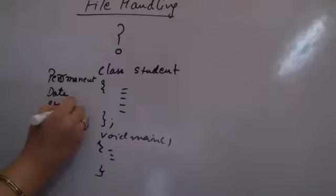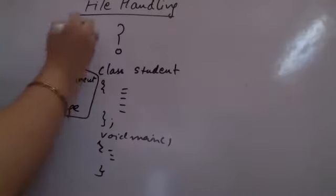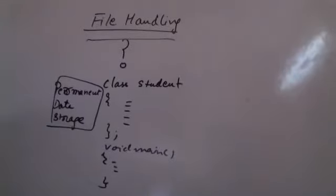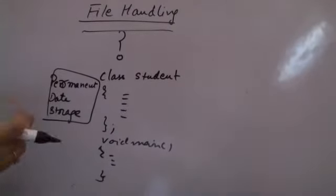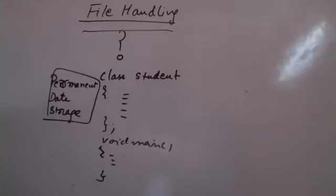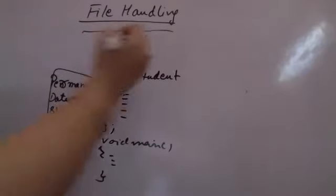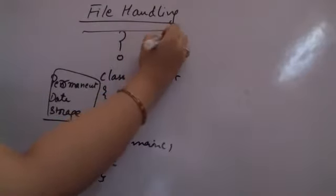The solution we are going to use is something called file handling. What we try to do in file handling is store the data in the form of files and save them in the computer. There are a lot of types of files available; with languages like Python you might have access to many. The files we will be using ourselves will be text files and binary files.